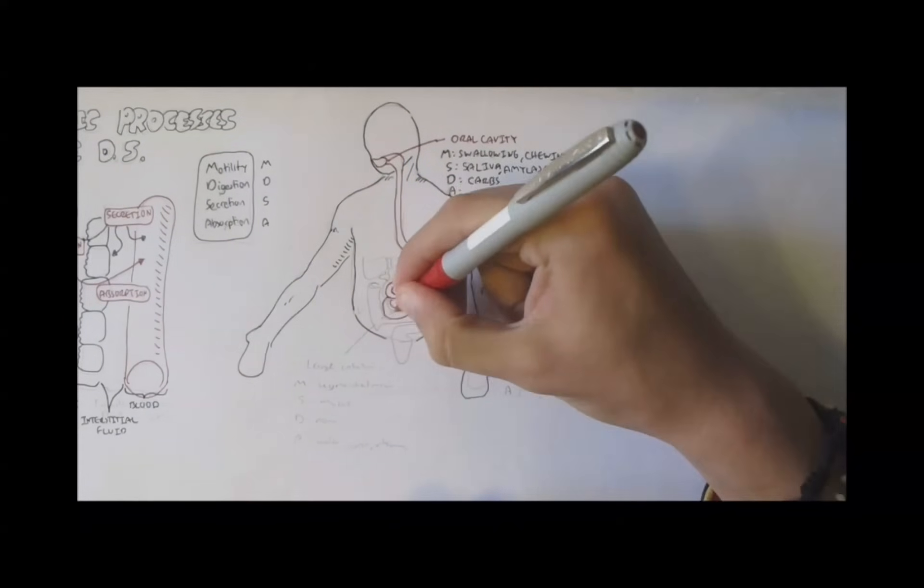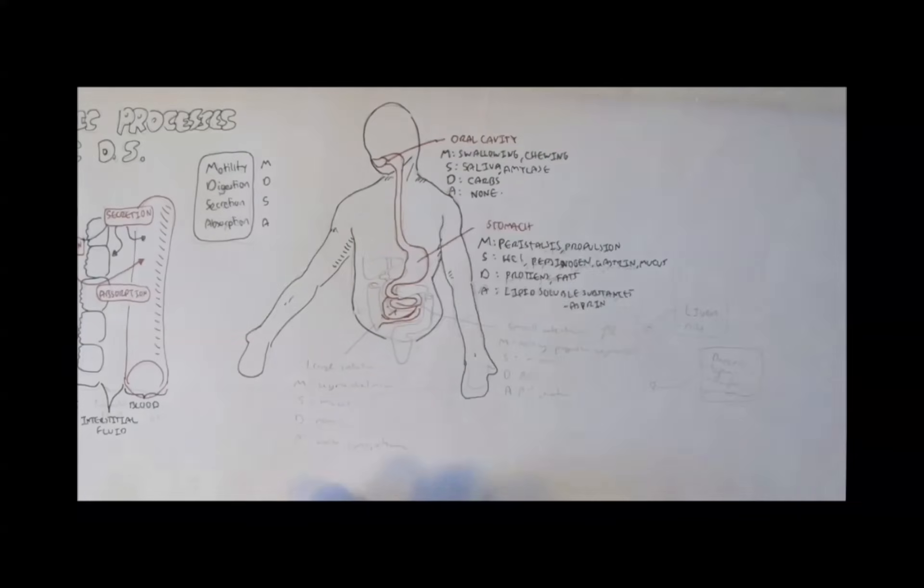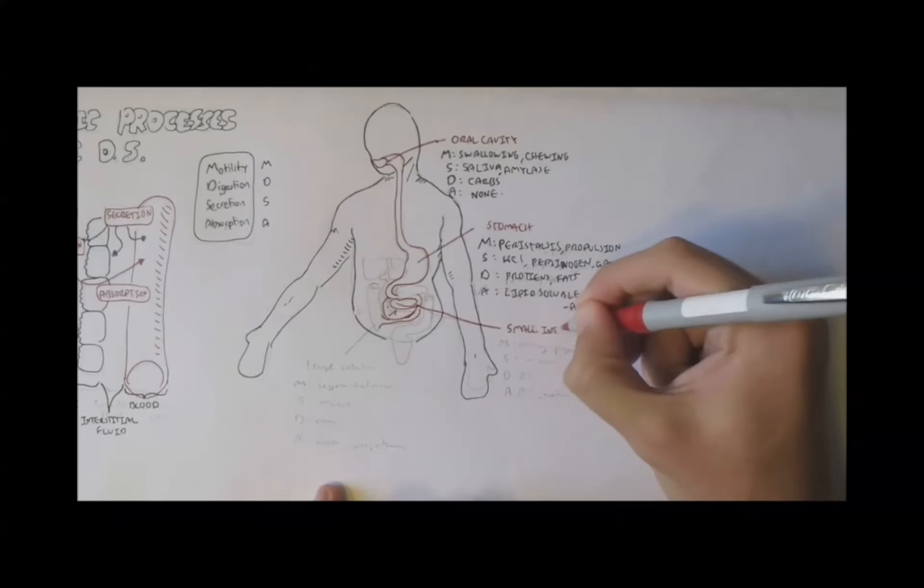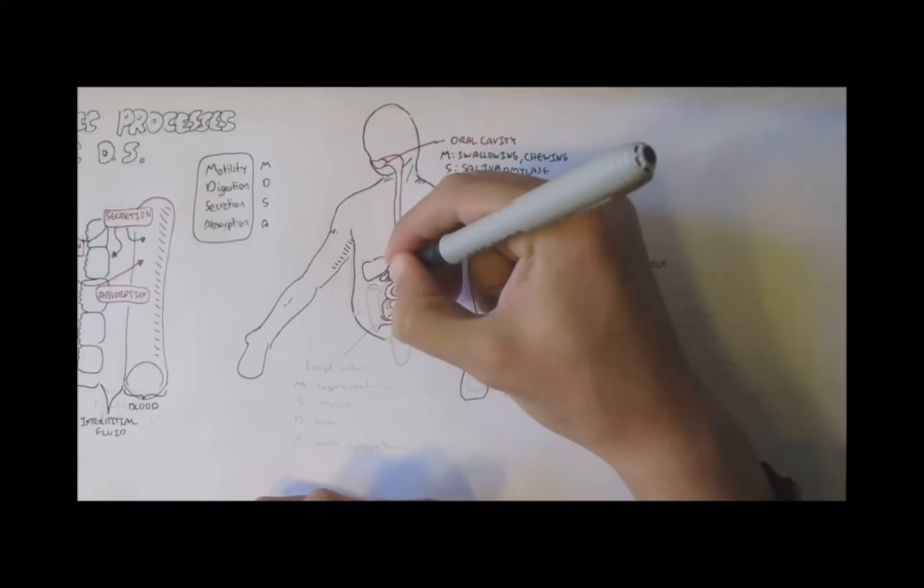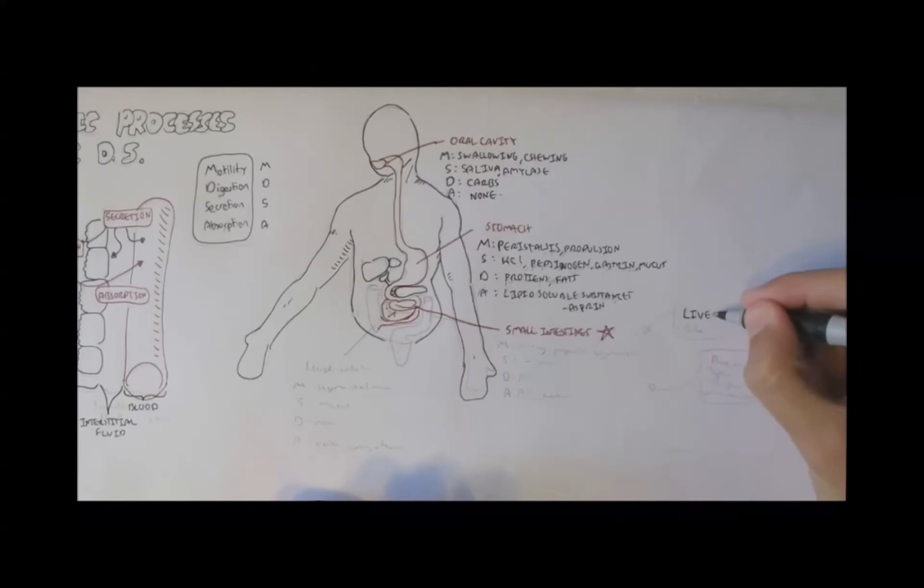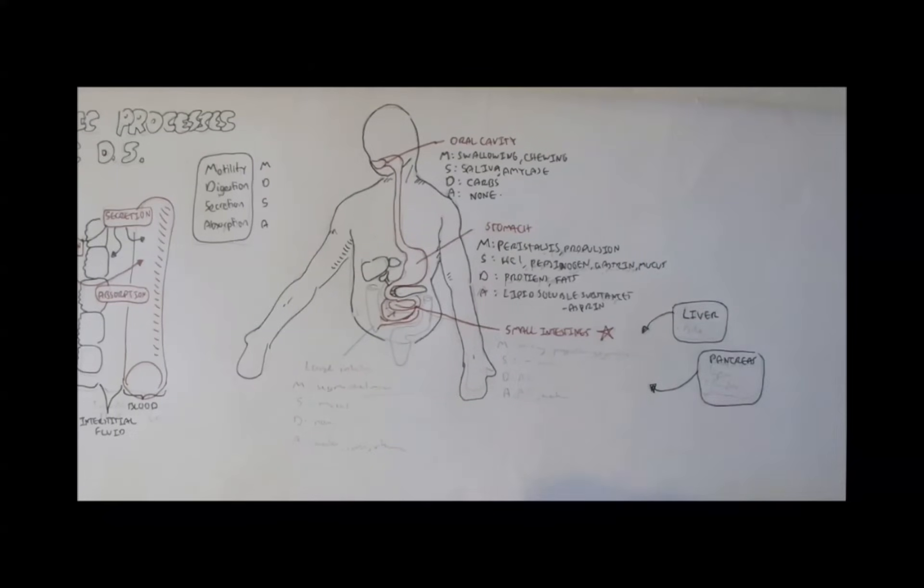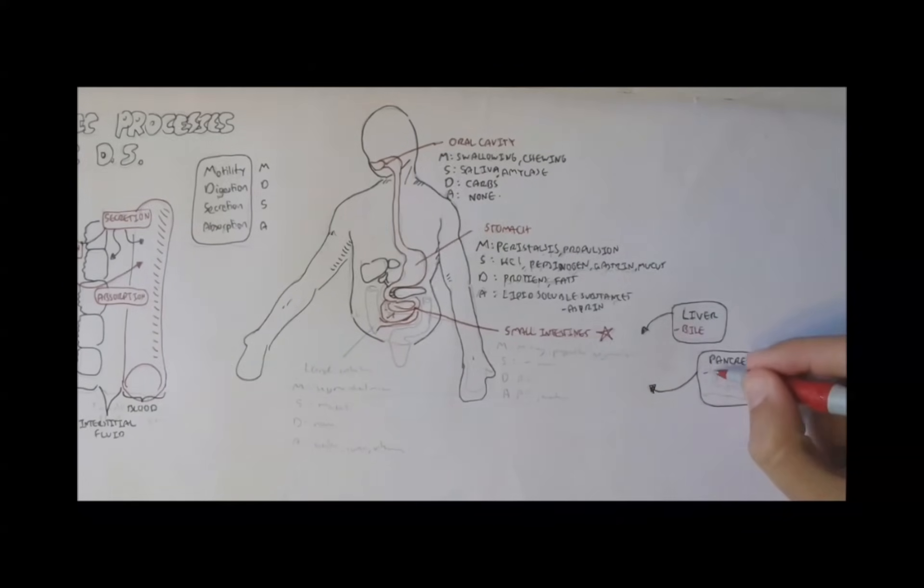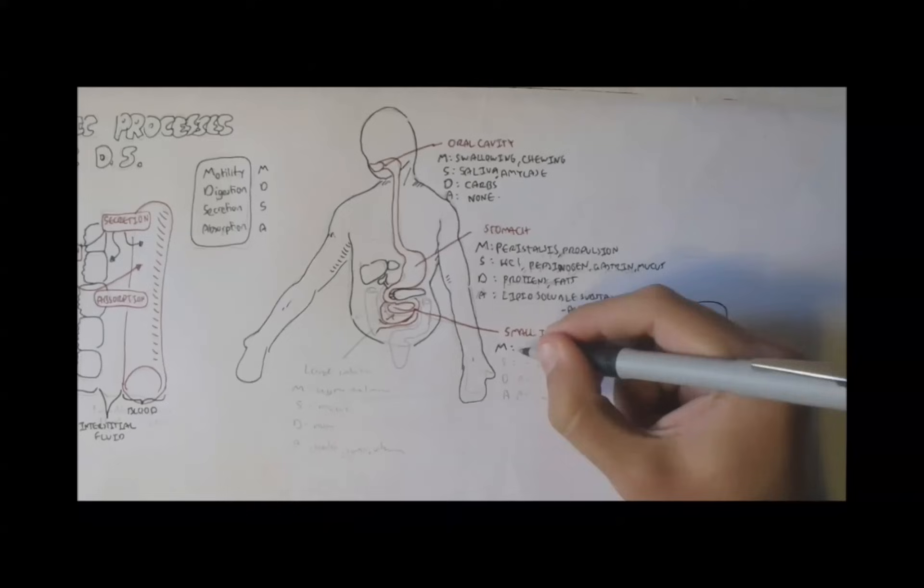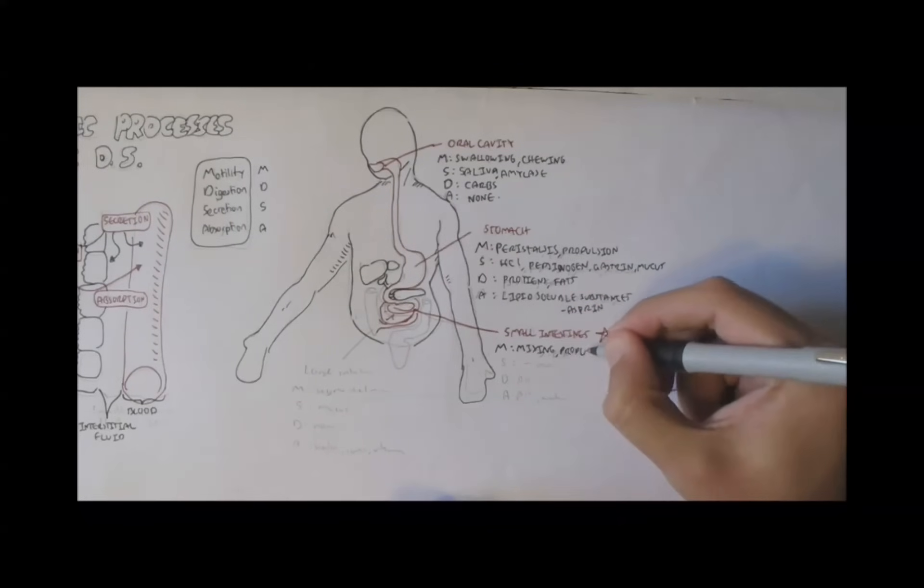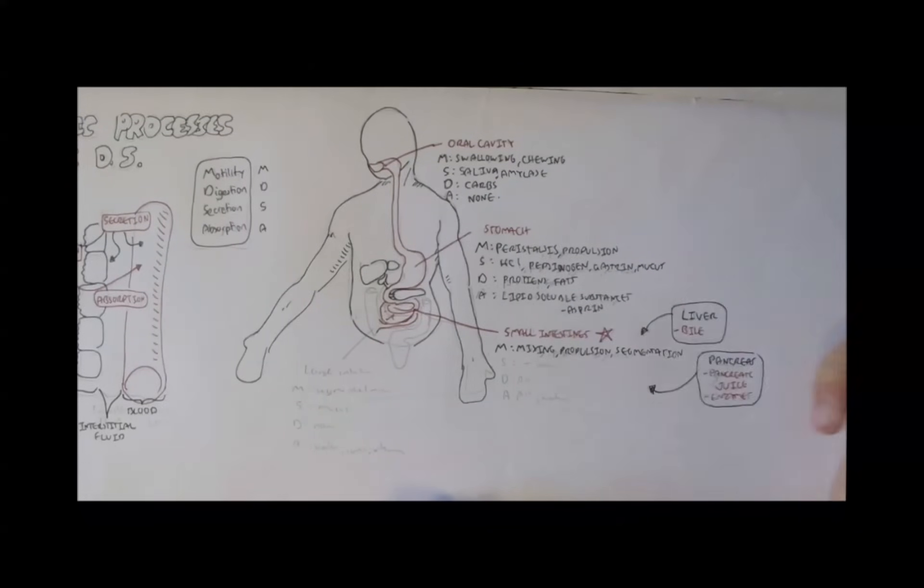Then you have the small intestines over here, which is the main site of absorption. It absorbs all the macromolecules, nearly. And why it's the main site of absorption? It's because the liver and the pancreas helps with the digestive process. The liver secretes bile for fat, and the pancreas secretes pancreatic juice and other enzymes to help with digestion of lipids, fats, and proteins.